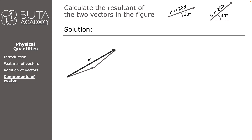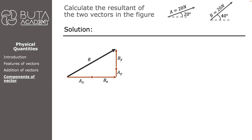We resolve vector A into AX and AY, and vector B into BX and BY. After rearranging the vectors to clarify the diagram, we have two vectors AX and BX on the horizontal axis and two vectors AY and BY on the vertical axis. Let's also resolve the resultant vector into its components, giving us RX and RY. As we can see, RX is equal to AX plus BX, and RY is equal to AY plus BY.